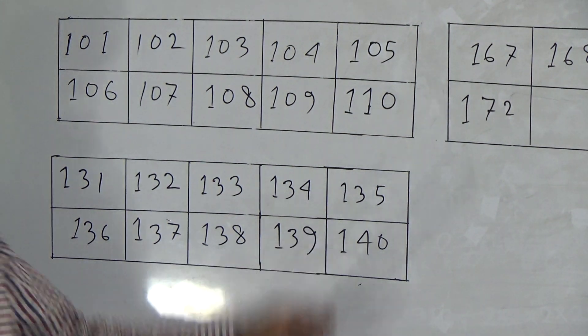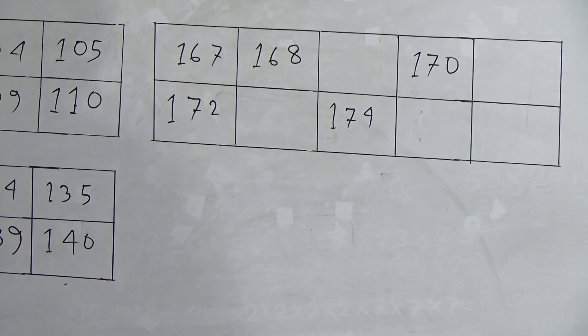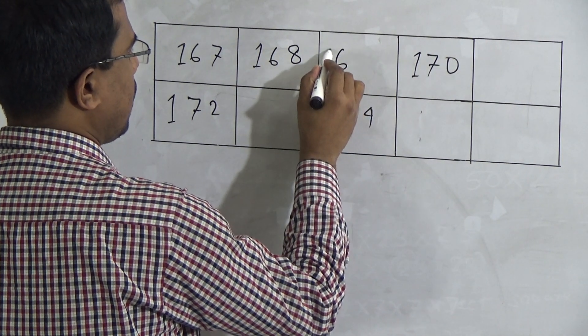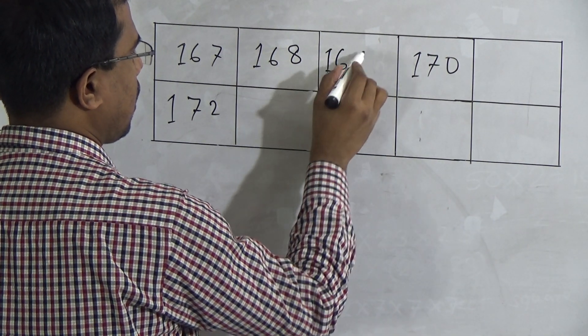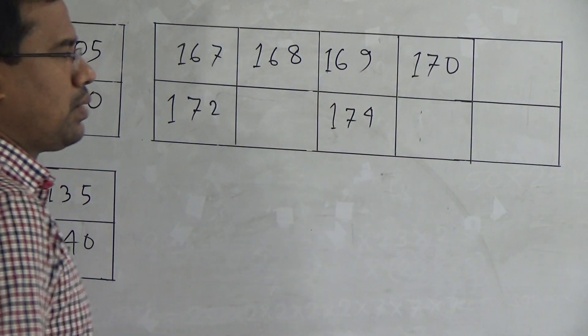Okay, we have finished it also. Now, we will solve this. Here first two numbers given. First number is 167. Then 168. After 168, you know that 169 will come. 169. Here after 169, 170 given.